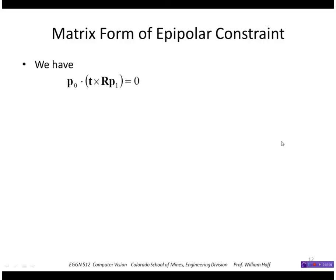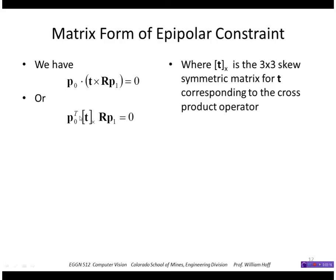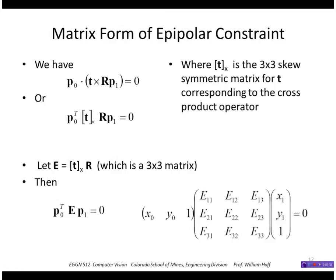So writing, we have the epipolar constraint as a cross product. We can also write as a matrix product, where I wrote the cross product operation as a 3 by 3 skew symmetric matrix for T. So let this product of T times R be called the matrix E.